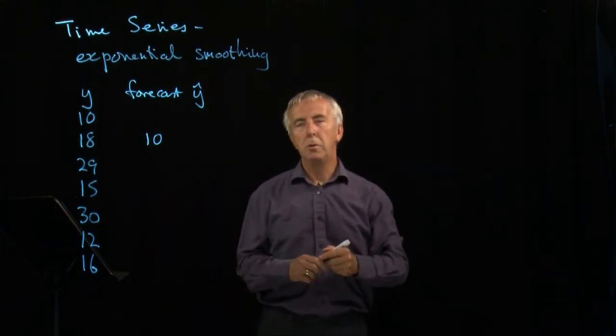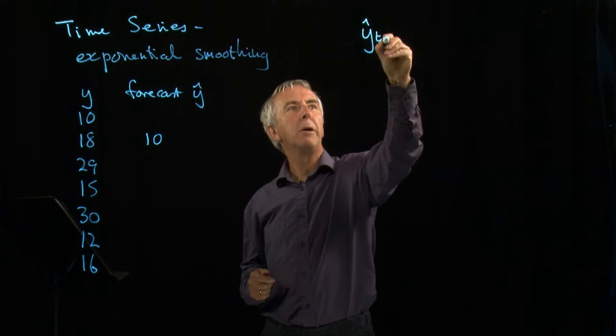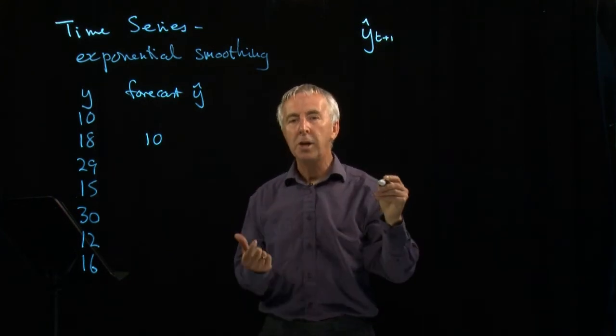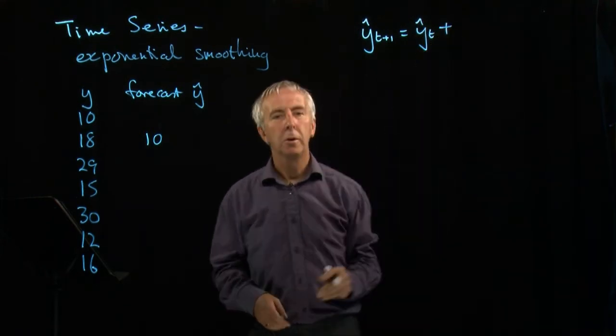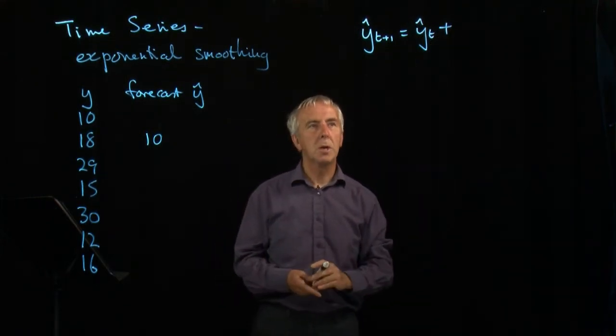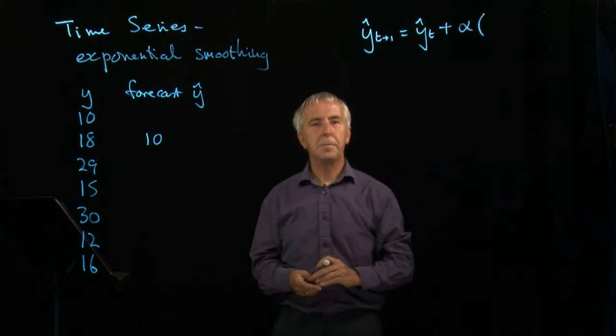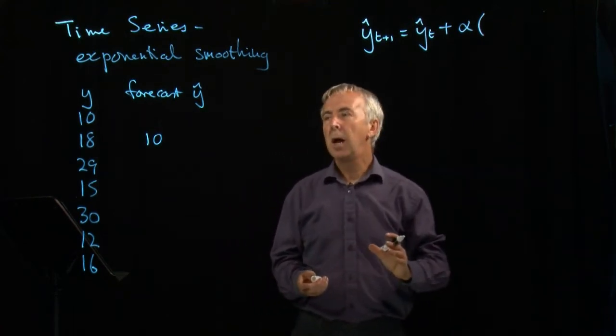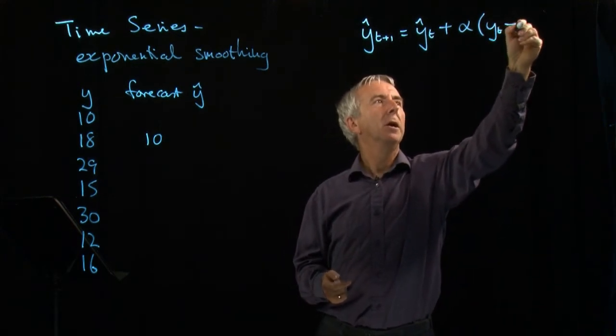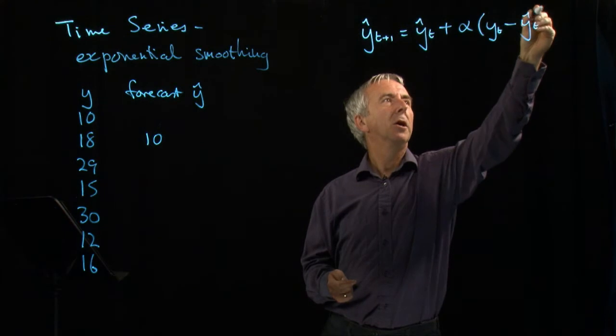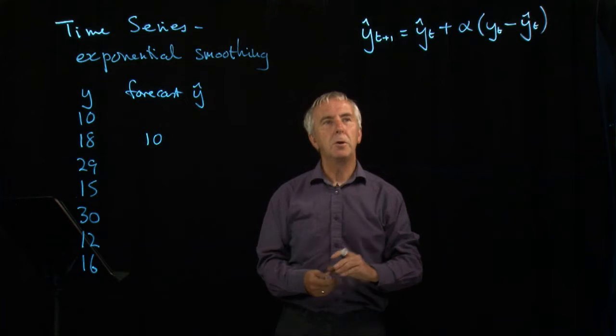And the formula that we use for any particular forecast at time period t plus 1, in other words the next time period, we say it's the previous forecast, which was the forecast at time t, plus some number alpha, which we'll talk about in a minute, times the error. How wrong were we before? And the error is the actual value at t minus what we thought it would be at t. So let's work through this, taking alpha as 0.3.